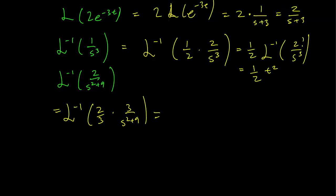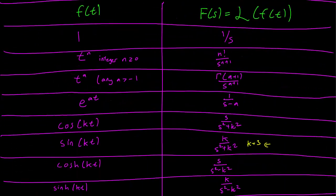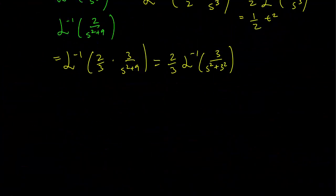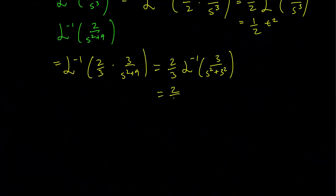This is just going to be equal to 2/3 Laplace Inverse of 3 over s² plus 3². And according to our table, this gets us sin(kt) with k equals 3. So this should just be 2/3 sin(3t).